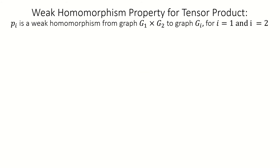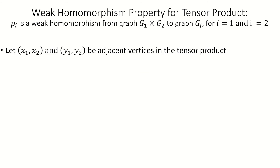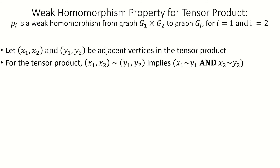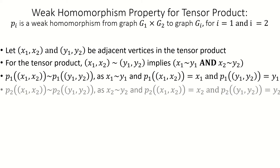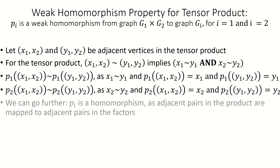For the tensor product, if a pair of vertices x sub 1 x sub 2 and y sub 1 y sub 2 are adjacent, then the first coordinates are adjacent and the second coordinates are adjacent. So the first projection, which maps to the first coordinate, will map a pair of adjacent vertices in the product to a pair of adjacent vertices in the first factor. Similarly, p sub 2 maps adjacent pairs to adjacent pairs in the second factor. This is definitely a weak homomorphism, and we can actually go a step further and say it's a homomorphism, because adjacent pairs are always being mapped to adjacent pairs.